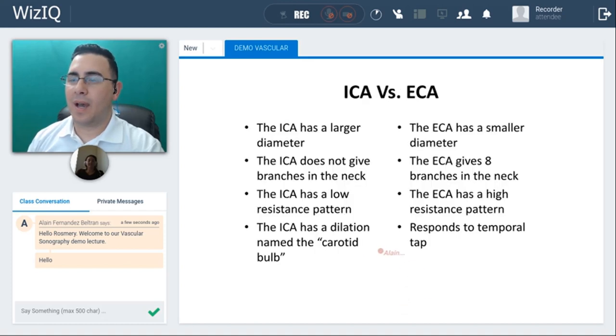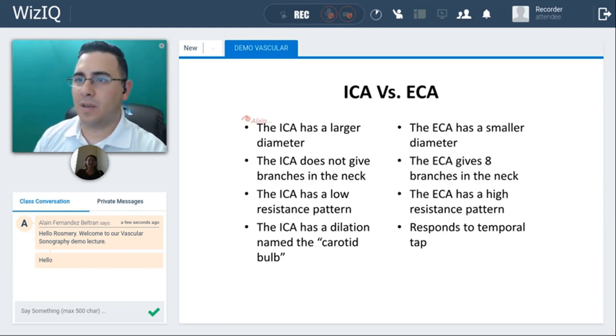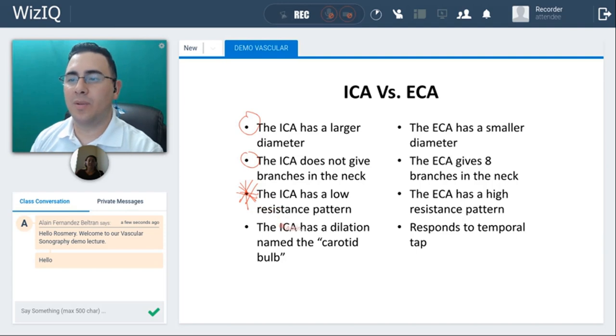So here I have a nice table to compare the internal versus external. The internal yes has a larger diameter most of the times. Internal does not give you any branches in the neck while the external is going to give you eight, but this is not the best feature to differentiate between one and the other. Internal has a low resistance pattern while the external has a high resistance one. The internal has a dilation that we call the carotid bulb. And external responds to temporal tap but this is not exclusive for the external.